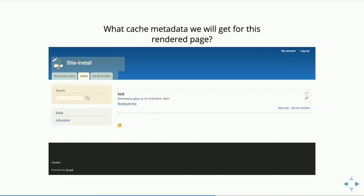Let's take the search block. What does it vary on? Configuration — you could configure it to go to a different search page. Permissions, absolutely. And URL — because if you put something in the search field, that block carries the current keywords from the URL. So it will vary by URL every time.